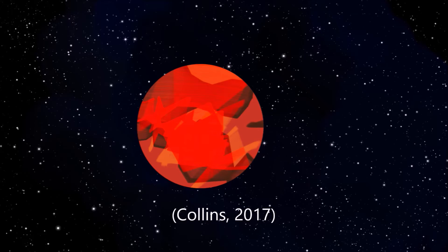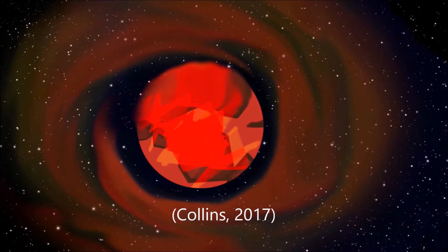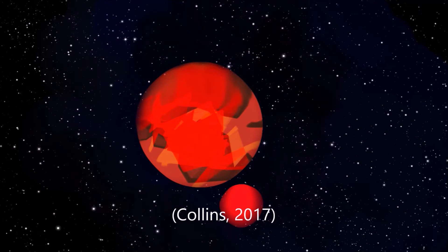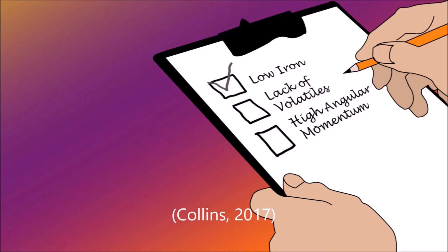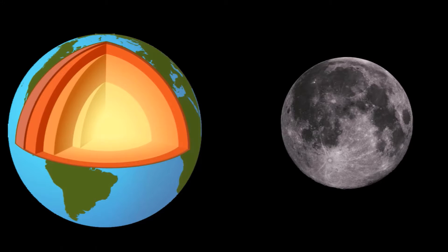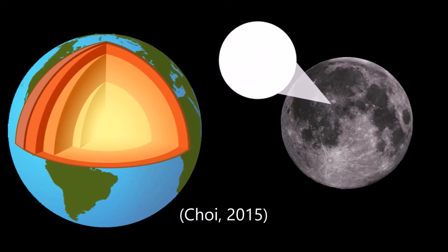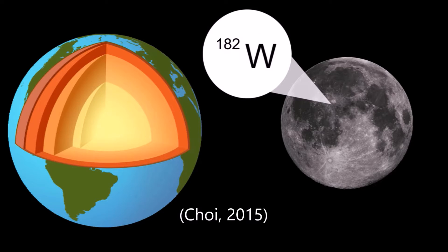According to simulations, a low-speed collision in which a Mars-sized protoplanet grazes the early Earth would produce a massive molten disk, which would rotate rapidly around the planet until the moon condensed. This simulation's prediction of low iron content, lack of volatiles, and high angular momentum all agree with observations. More support for the giant impact theory comes from the higher abundance of isotope tungsten-182 on the moon compared to Earth's mantle.